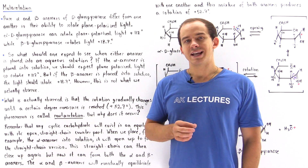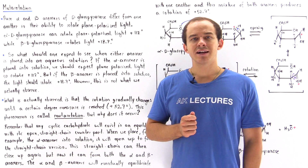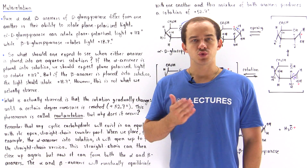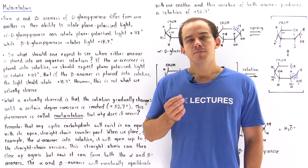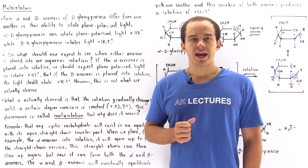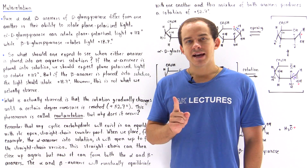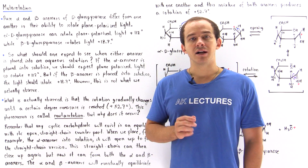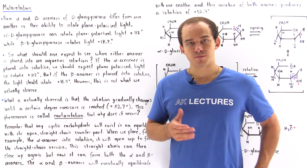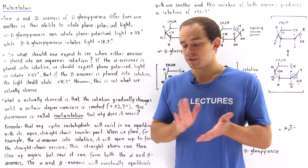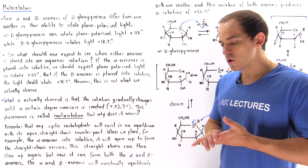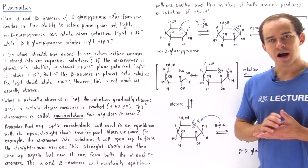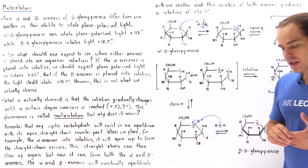Let's take a look at a common reaction that deals with sugar molecules known as mutarotation. As an example, let's focus on the glucose molecule — more specifically, let's focus on D-glucopyranose.